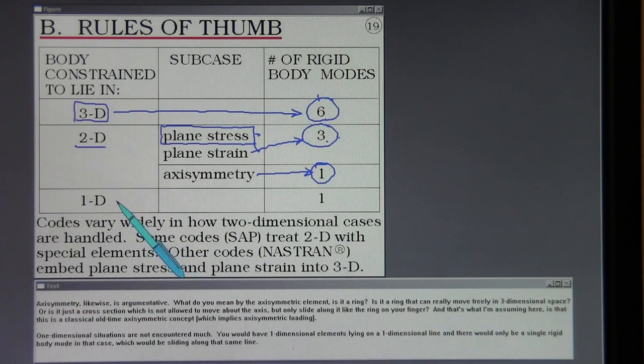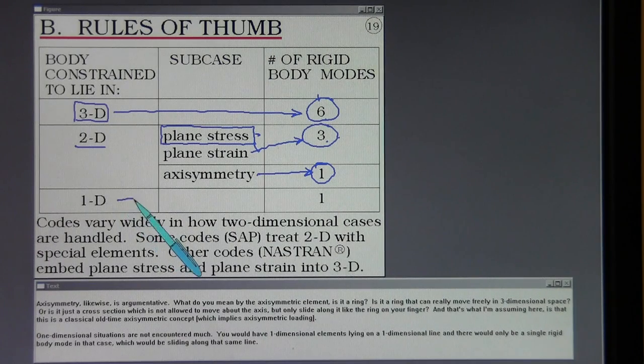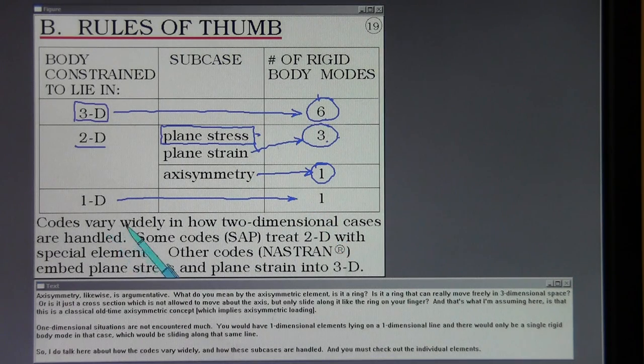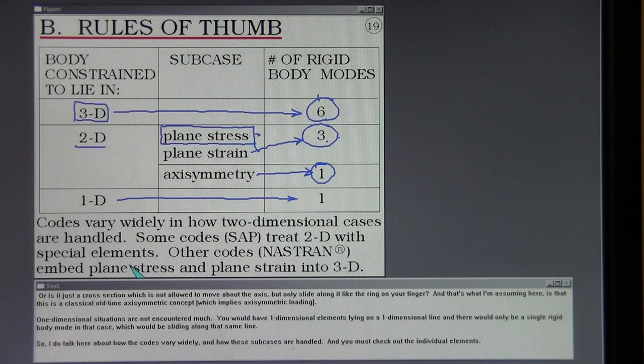One-dimensional situations are not encountered much. You would have one-dimensional elements lying on a one-dimensional line and there would only be a single rigid body mode in that case which would be sliding along that same line. So I do talk here about how the codes vary widely and how these sub-cases are handled and you must check out the individual elements.